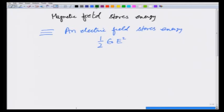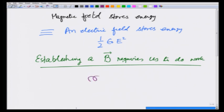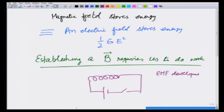Why should there be energy in a magnetic field? The reason is that establishing a magnetic field B requires us to do work. For example, if I take an inductor and try to establish a current through it via a switch, there is a back EMF developed in the inductor. This EMF opposes the change — that is, it opposes the establishing of the current — and is therefore known as back EMF.